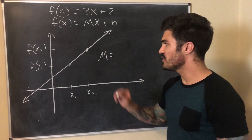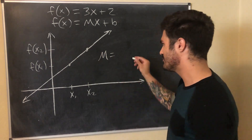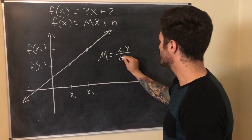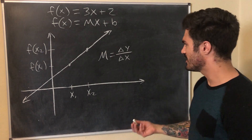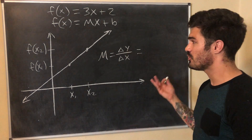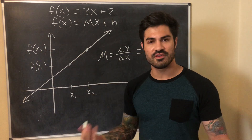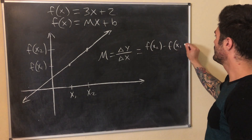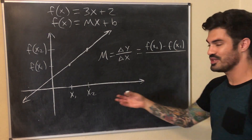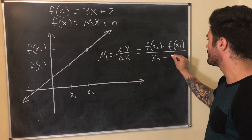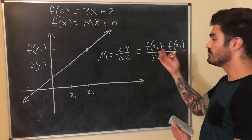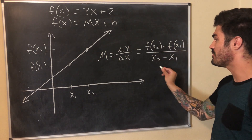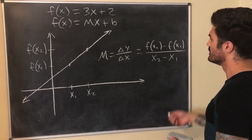Then you can say: slope m equals the change in our outputs (y values, or f(x) values) — written as Δy — divided by the change in our input values x, which is Δx. The change in our y values is the difference f(x2) minus f(x1), and the change in our x values is x2 minus x1. These were chosen arbitrarily — you could switch them, but you need to be consistent: if you do, write f(x1) minus f(x2) divided by x1 minus x2.